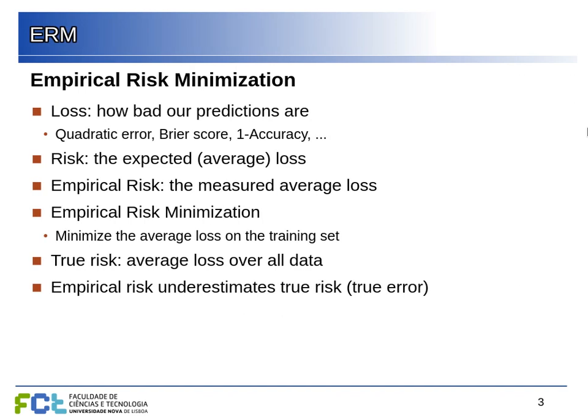The idea of risk more broadly takes into account both the probability of a mistake and the consequences of that mistake. A 5% probability of dropping my keys is a lower risk than a 5% probability of a heart attack, even though the probability is the same. We'll start with risk as a problem of misclassification. Loss has been always a measure of the error: the quadratic error, one minus the accuracy, or the fraction of mistakes.